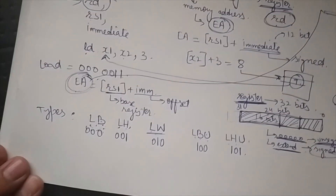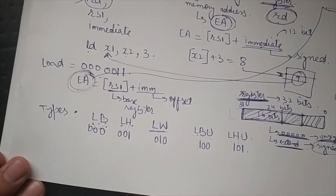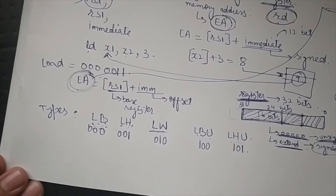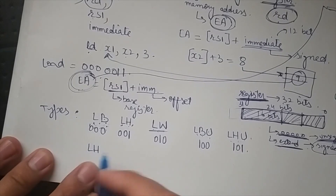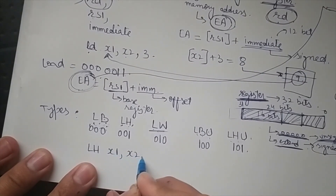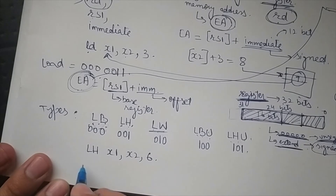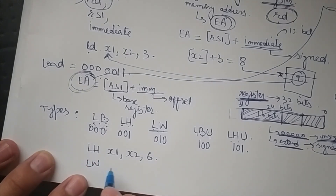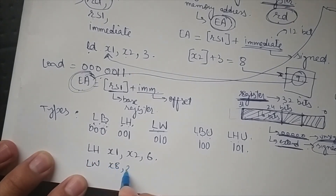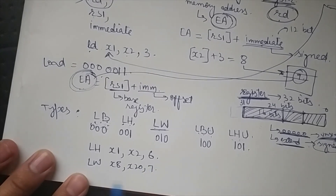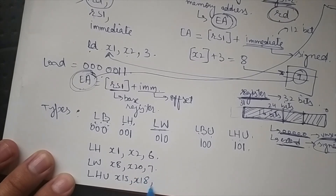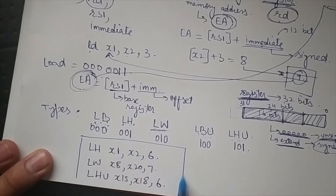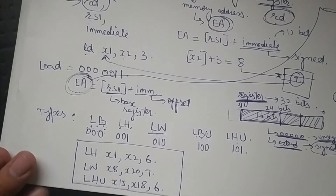Here are some practice instructions to encode into machine format: load half word x1, x2, 6; load word x8, x20, 7; and load half word unsigned x15, x18, 6. Please encode these instructions into machine format.